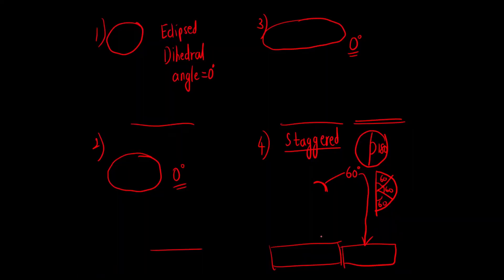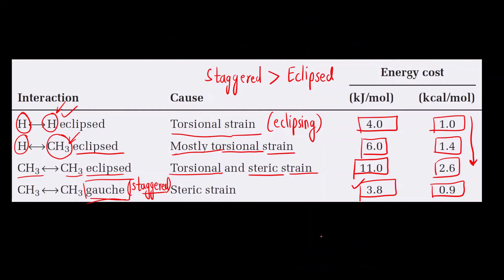Now let us remember these values — it is quite simple. For H–H eclipsing: 4 kJ/mol. For H–CH3: 6 kJ/mol. For CH3–CH3 eclipsing: 11 kJ/mol. For CH3–CH3 in Gauche conformation: 3.8 kJ/mol.